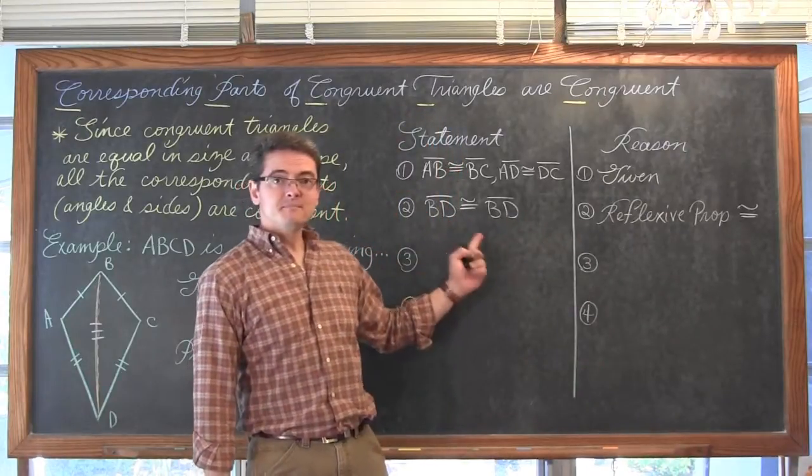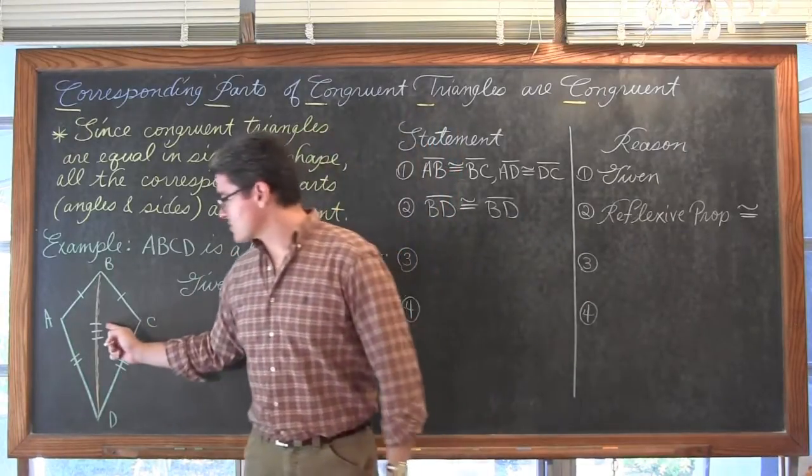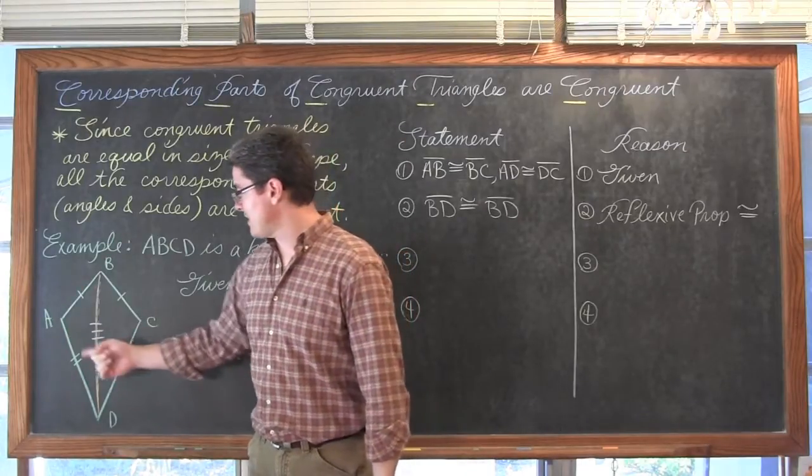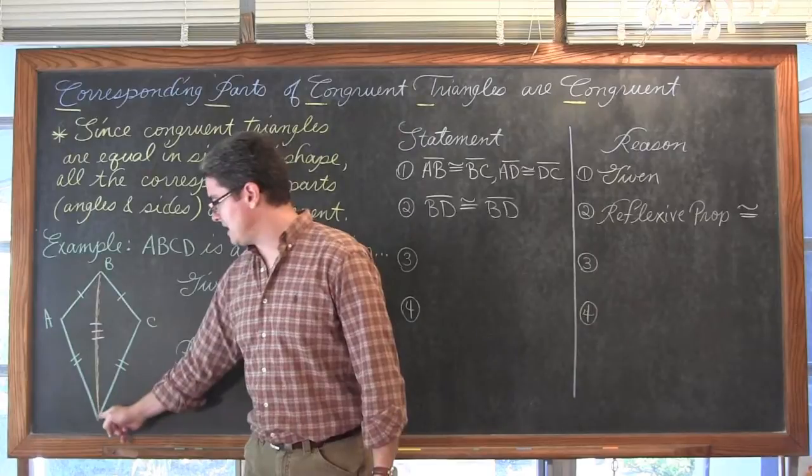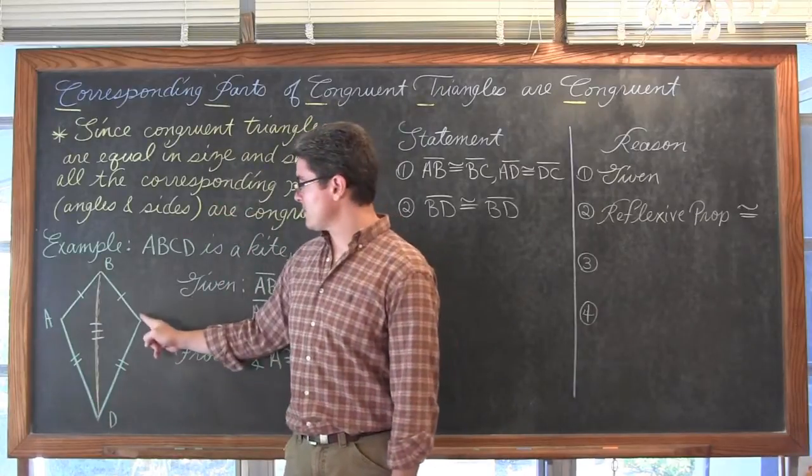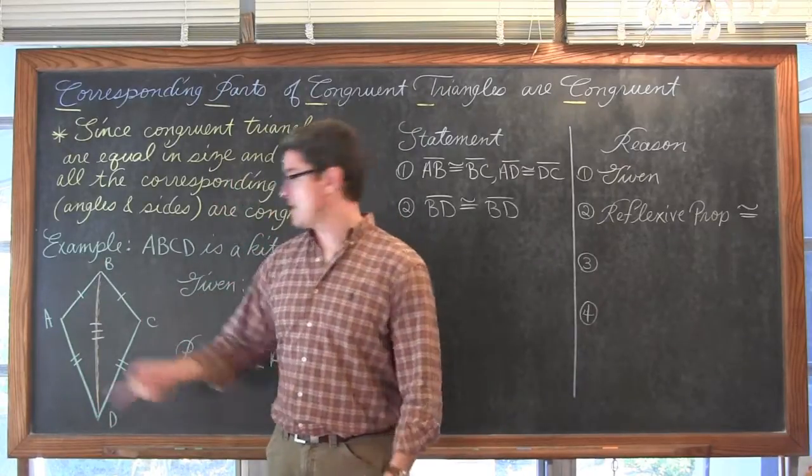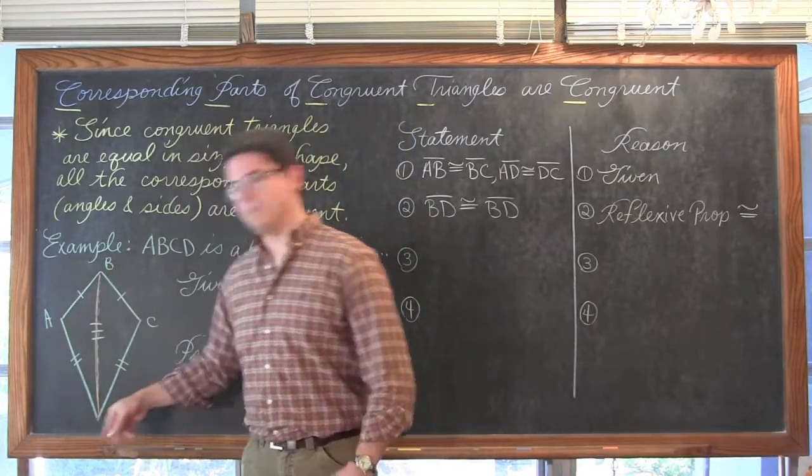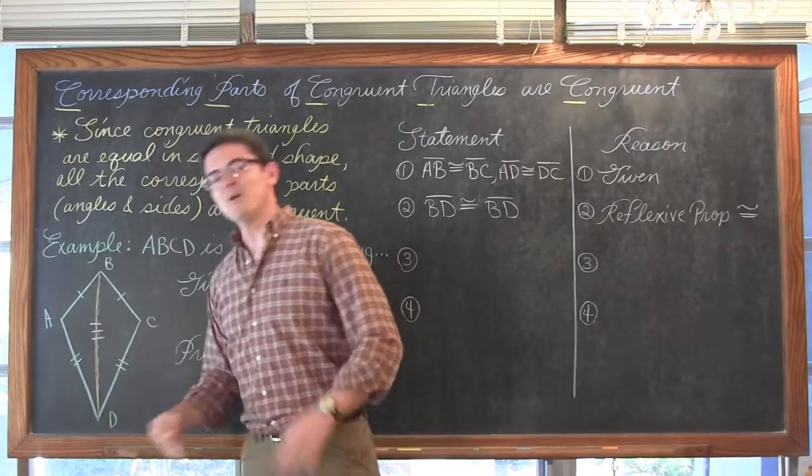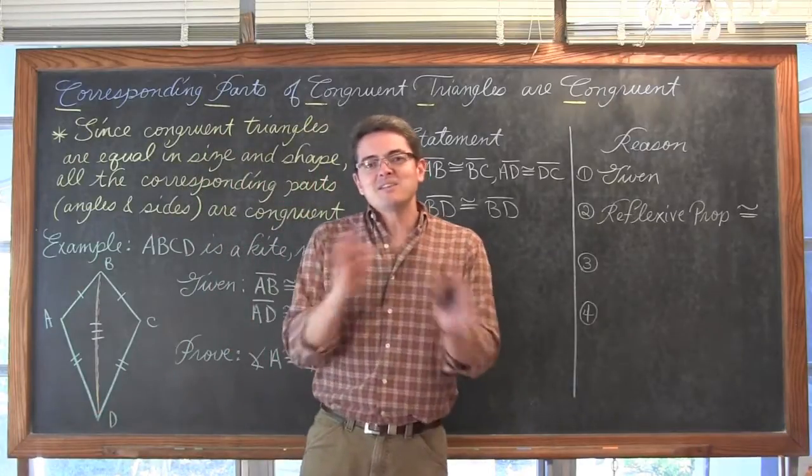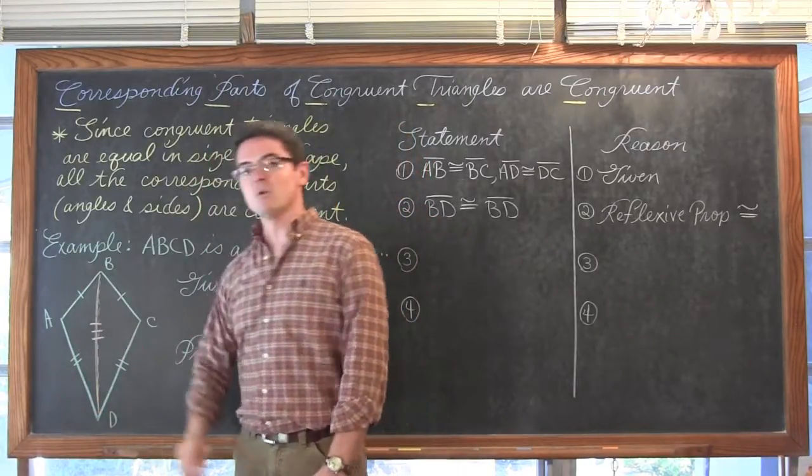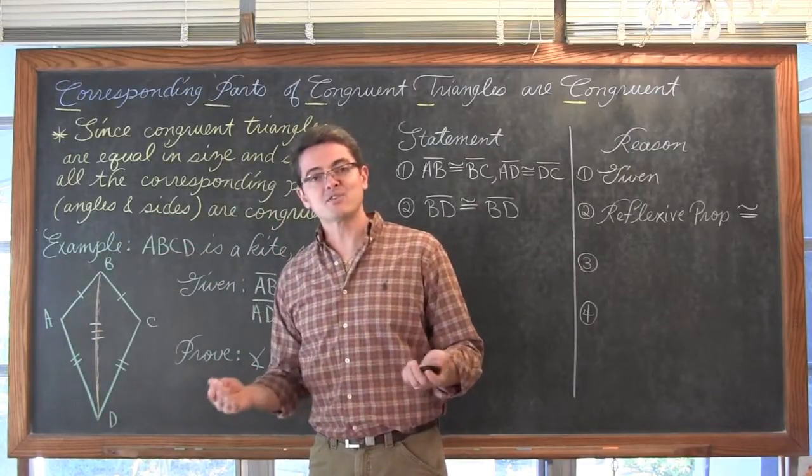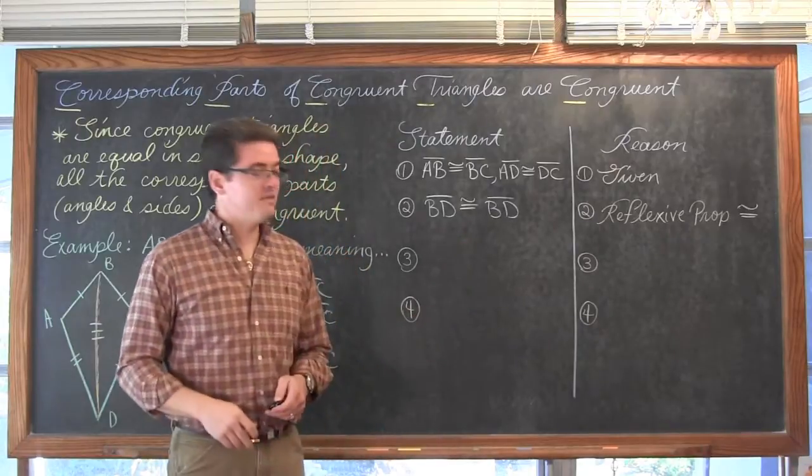So there is my statement. We have got that extra piece of information now marked inside my diagram, and we can say that triangle ABD is congruent to triangle CBD, or you could say ADB and CDB, or you could say BAD and BCD, whatever. We are going to state that these two triangles are congruent because of the side side side postulate. Let's get that in here in line three.